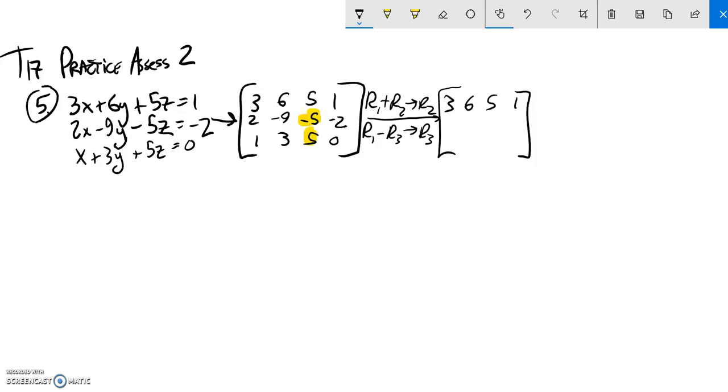Second row, row 1 plus row 2. So 3 plus 2 is 5. 6 plus negative 9 is negative 3. 5 minus 5, that's 0. 1 plus negative 2 is negative 1.